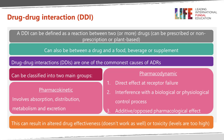Drug-drug interactions are one of the most common causes of adverse drug reactions, and the interactions can be classified in two main groups. One is pharmacokinetic, which involves absorption, distribution, metabolism, and excretion. And then we also have pharmacodynamics — how drugs affect receptors, what the body does, interference with biological or physiological control processes. Is there an additive effect? Is there an opposed effect? All of these things can result in altered drug effectiveness or toxicity where the levels are too high.